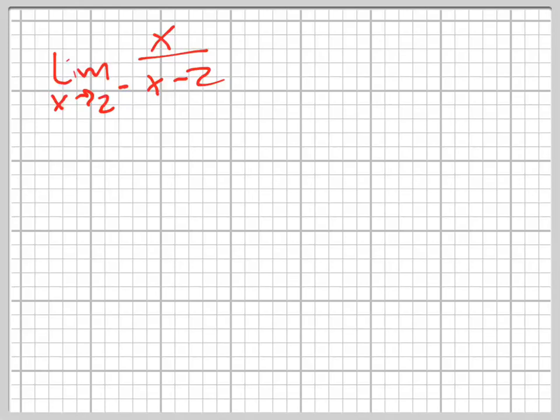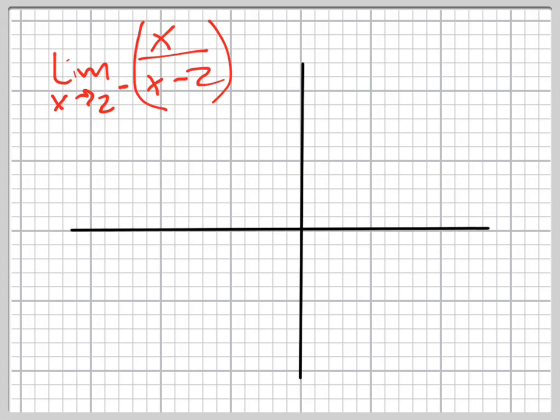They want us to find the limit as x goes to 2 from the left of this function right here. So remember this is a rational function. That means there's going to be an asymptote right here at 2. There's going to be a vertical asymptote at 2.